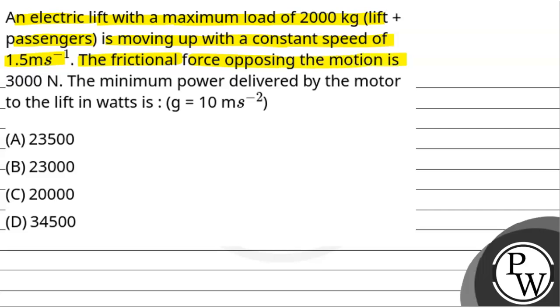The frictional force opposing the motion is 3000 N. The minimum power delivered by the motor to the lift in watts is, where g equals 10 meters per second squared.